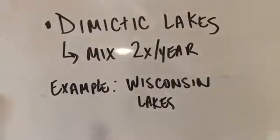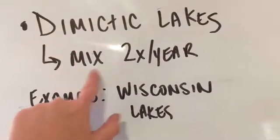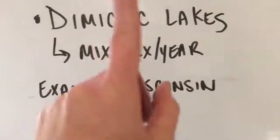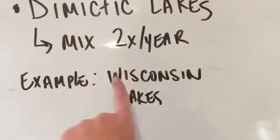If that's enough science for you, that's totally fine — you can click out now knowing lake mixing and density. But if you want to get a little more science-y, we're going to do that. There are different types of mixing — not all lakes are on the same mixing schedule as ours. Our type of lakes are called dimictic lakes. Di meaning two — they mix two times per year, once in the spring and once in the fall. Most of the lakes here in Wisconsin are this type.